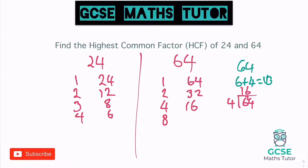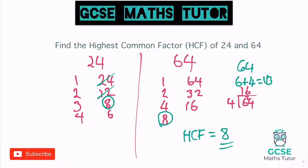Now let's have a look at which is the highest number in both. Starting with 24's factors from the top: 24 doesn't go into 64's factors, 12 didn't go into 64. But eight — being the biggest number here — does go into both. So our highest common factor is eight. I'll abbreviate highest common factor to HCF, and HCF equals eight.